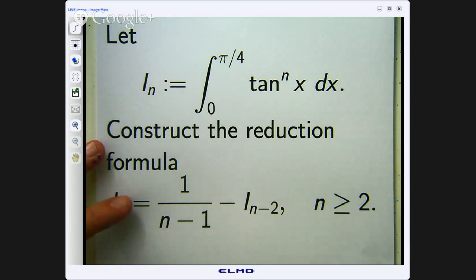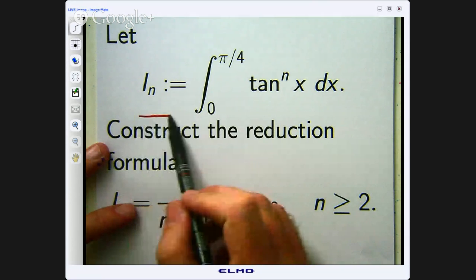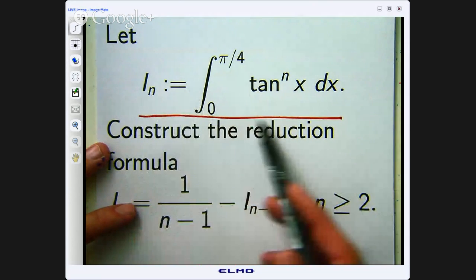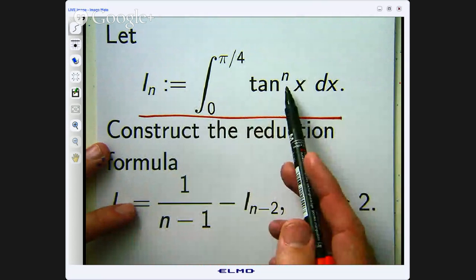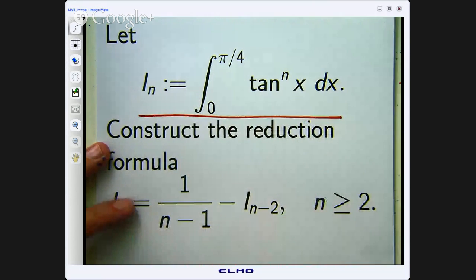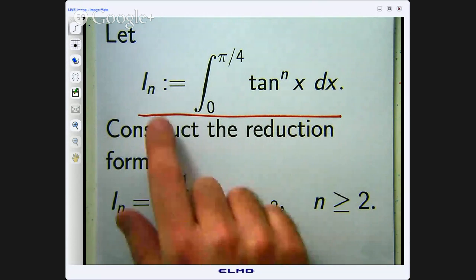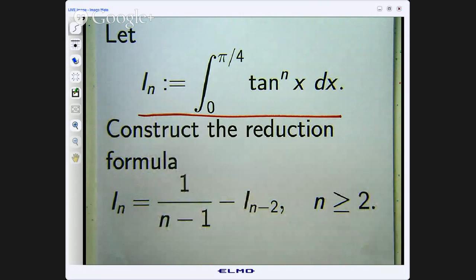So here we have an integral, I sub n, defined by this value where n is the power of this tan function. Essentially we have a sequence of values for n equals 1, 2, 3, etc.